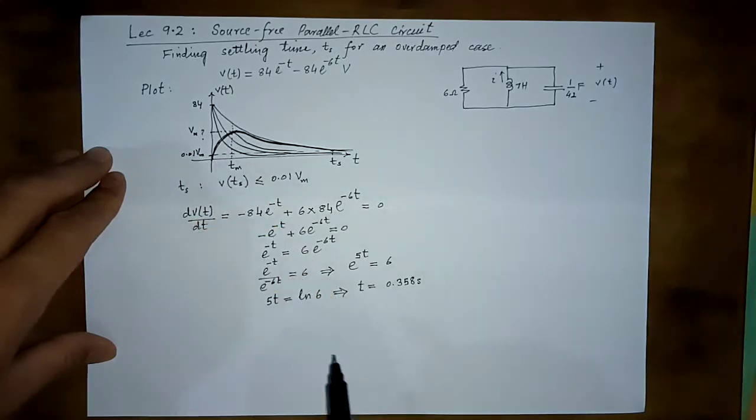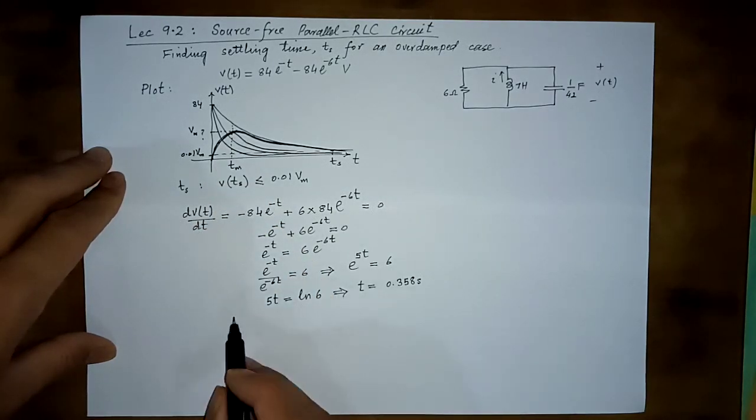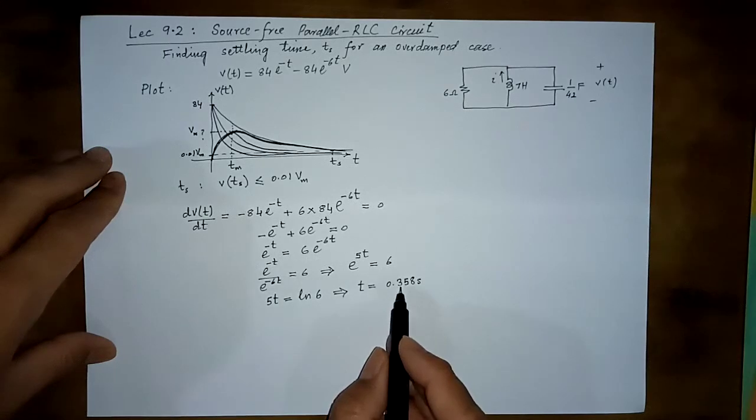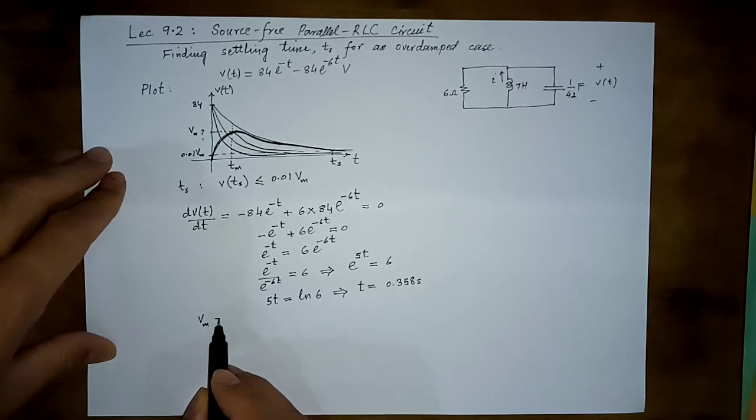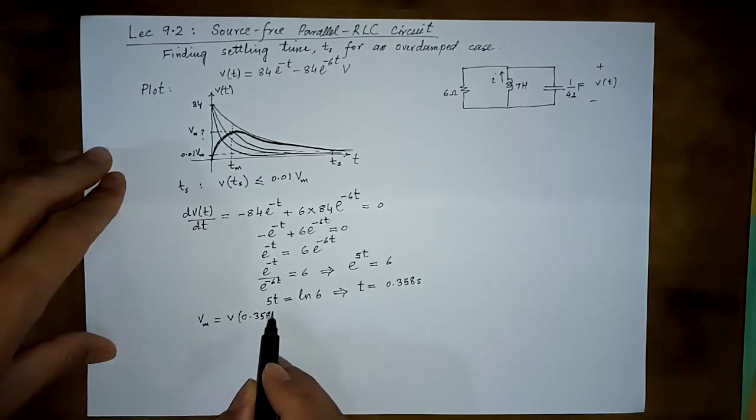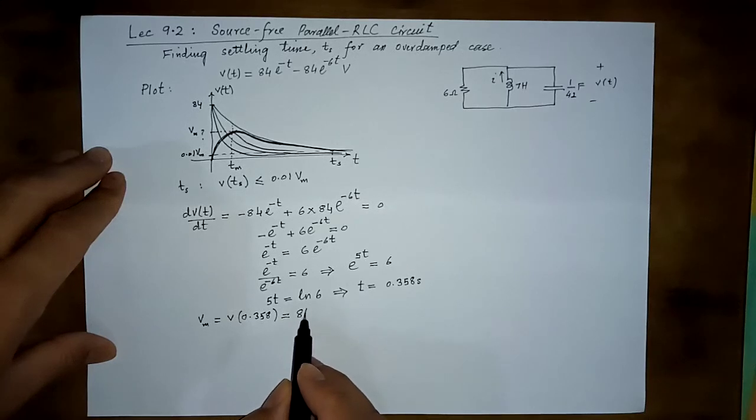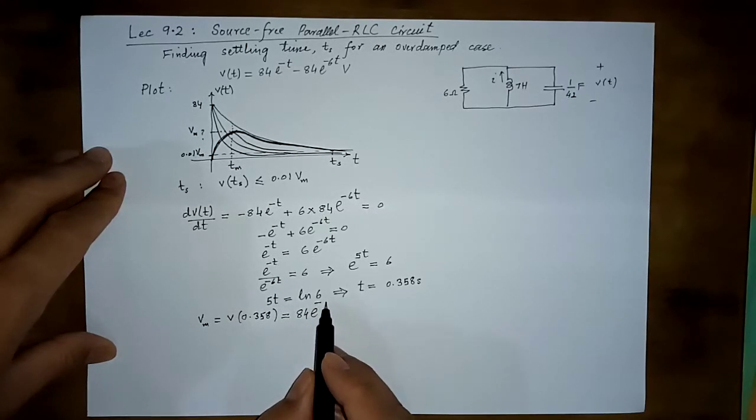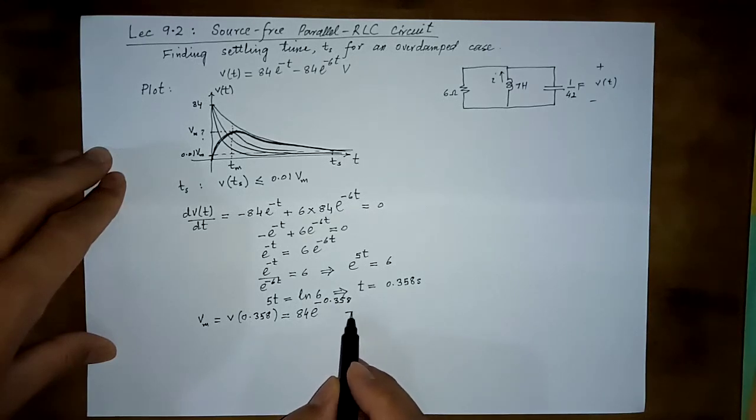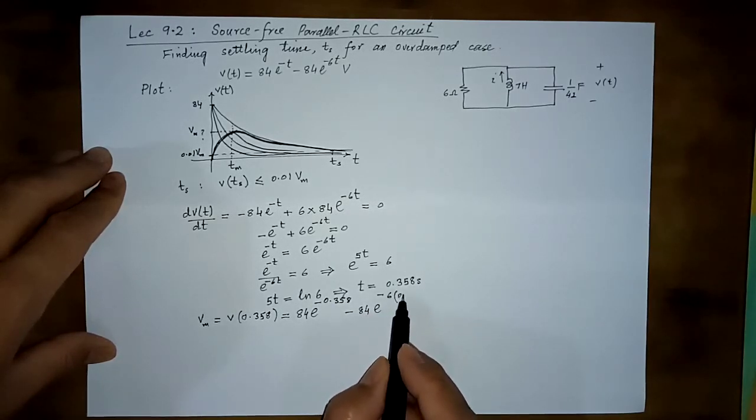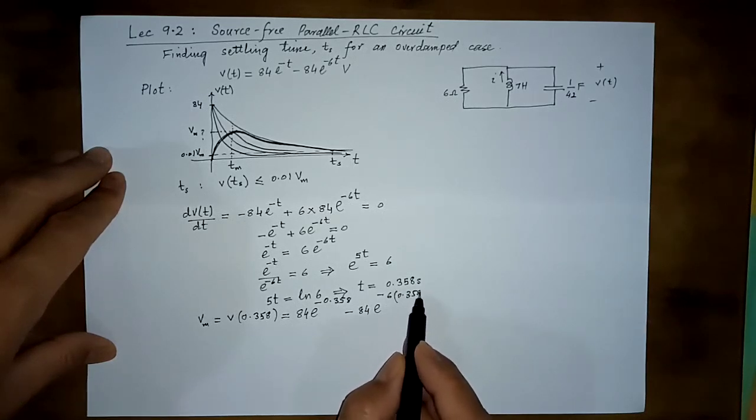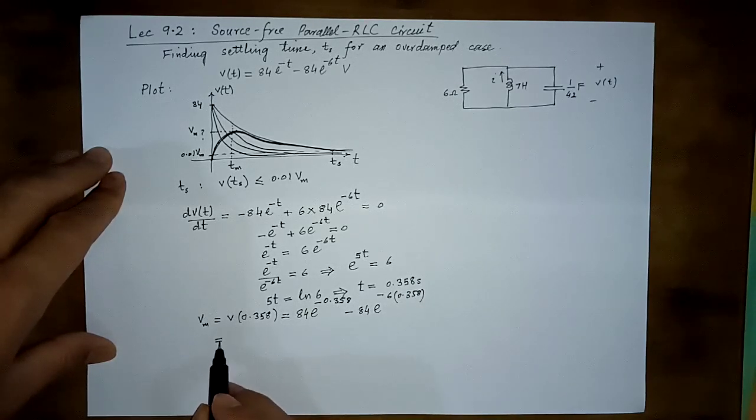And the maximum value can be found by putting this T back into the original equations. Vm would be v at 0.358, and that would be 84e raised power minus 0.358 minus 84e raised power minus 6 times 0.358.